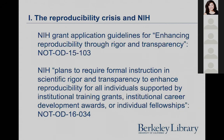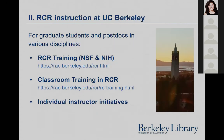As Fred mentioned in his presentation, as of 2016, NIH grant application reviews include criteria aimed at enhancing the reproducibility of research findings, and NIH also has a plan to explicitly require formal instruction in experimental rigor and transparency for funded researchers. At UC Berkeley, RCR instruction has already been interpreted to include practices enhancing reproducibility as well as research ethics.